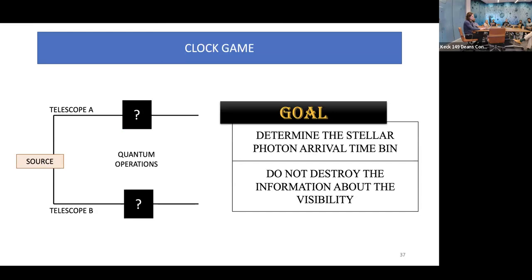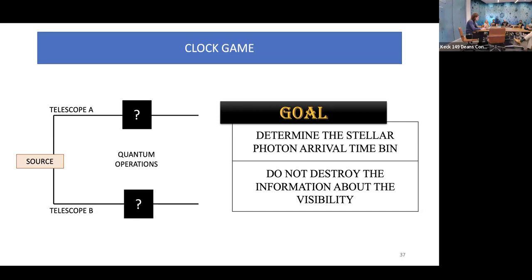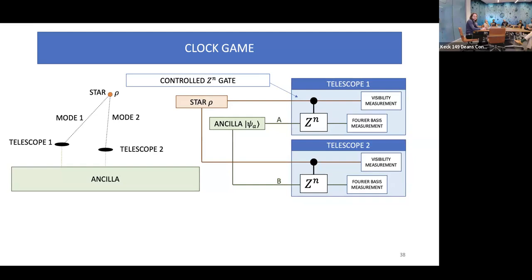In the clock game introduced in our next paper, the goal is slightly different. Rather than estimating visibility directly, we take a step back: just determine the stellar photon arrival time bin in a non-destructive way that does not destroy the information about visibility. Essentially we want to ask: has the stellar photon arrived? If yes, when? And once we know that, we can do something else with that photon to determine visibility.